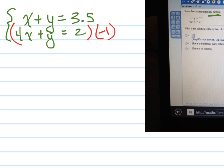When we multiply everything through by negative 1, we get negative 4x minus y equals negative 2. So I'm going to cross that equation out. Now we can take that equation along with the first equation.